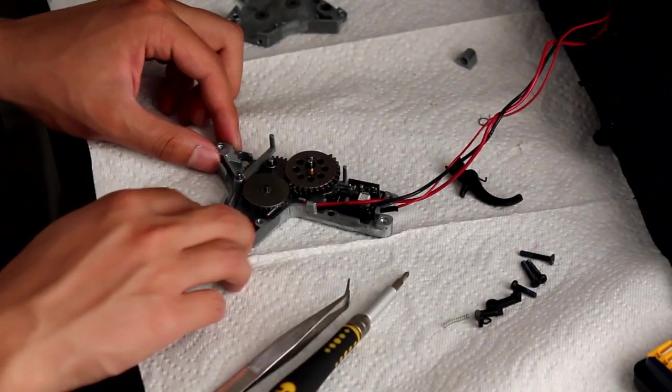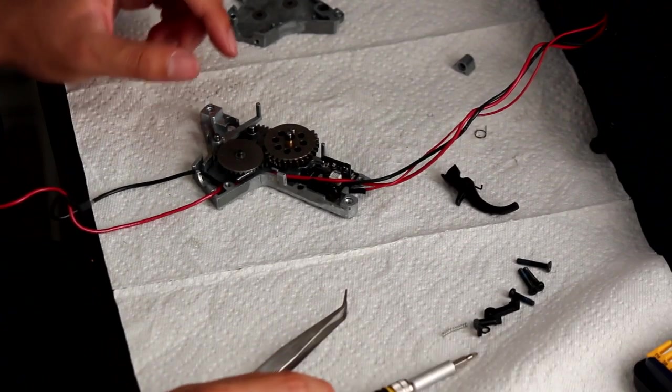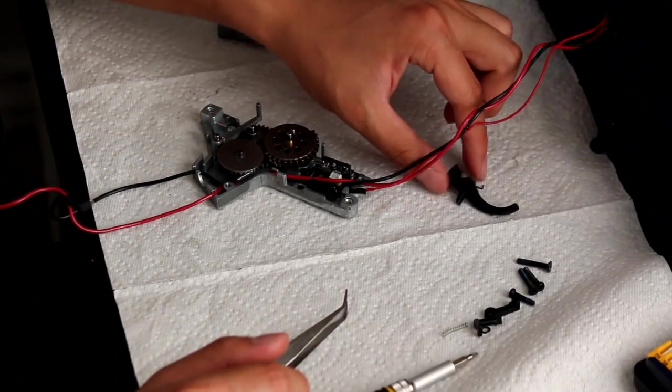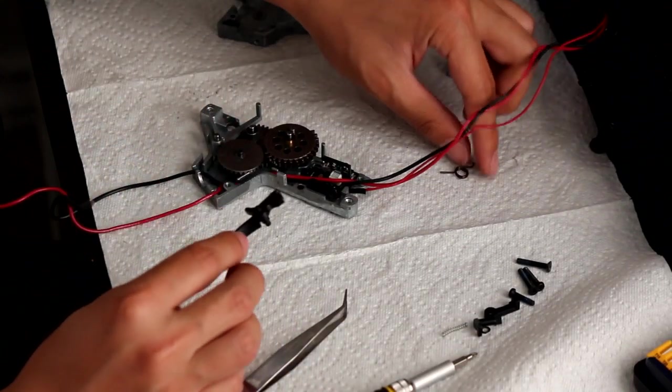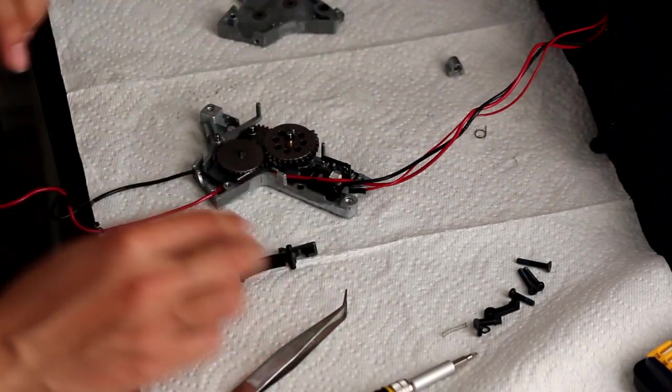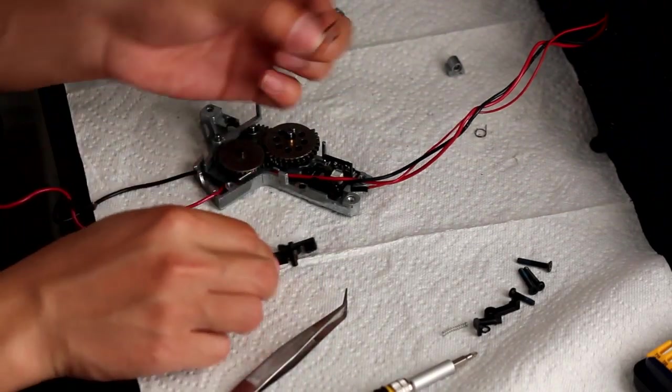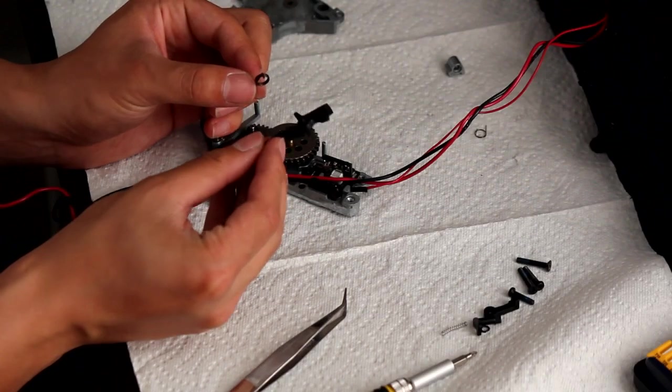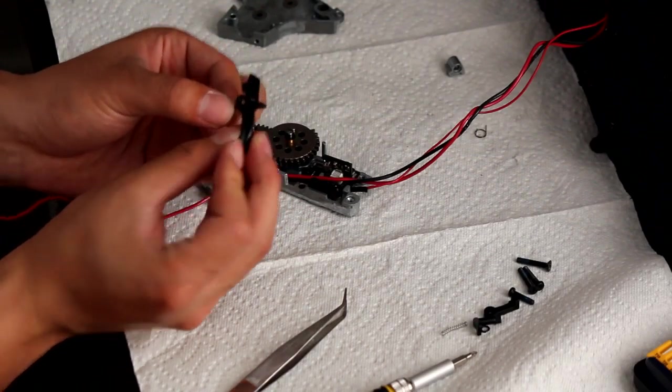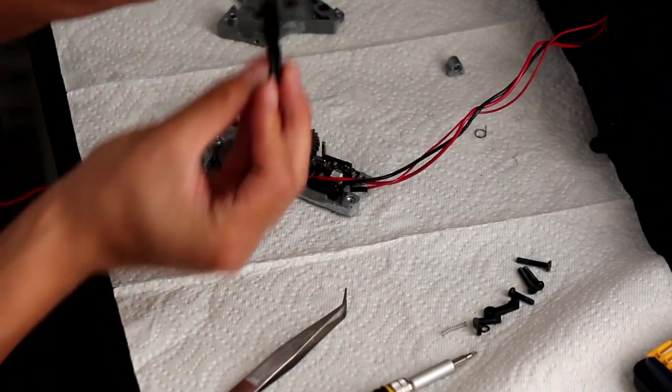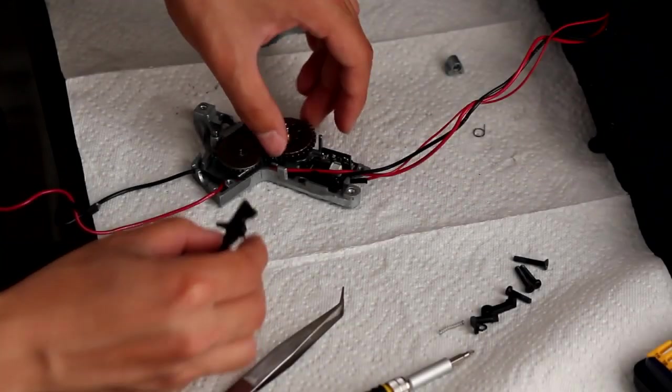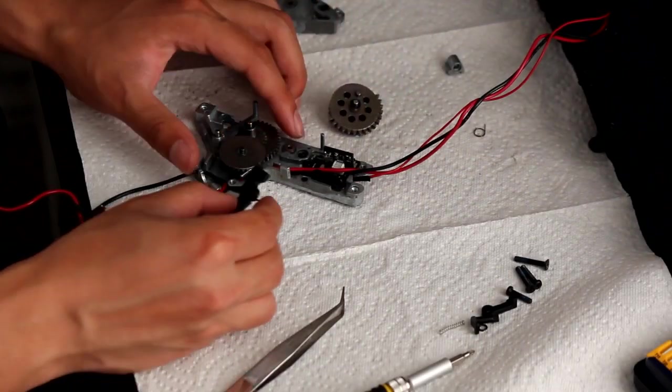Alright, now that we have the gears in, we're going to go ahead and do the trigger. Now you're going to take your trigger and the spring. And you're going to want to thread the spring through the hole in the trigger. Actually, it'll probably be easier if you take out that last gear.